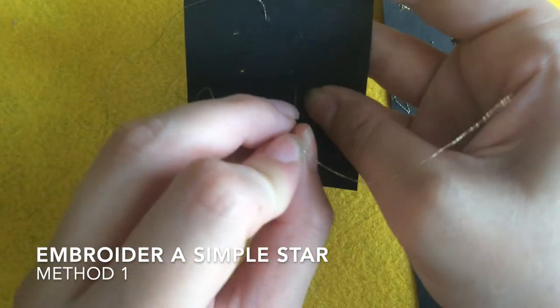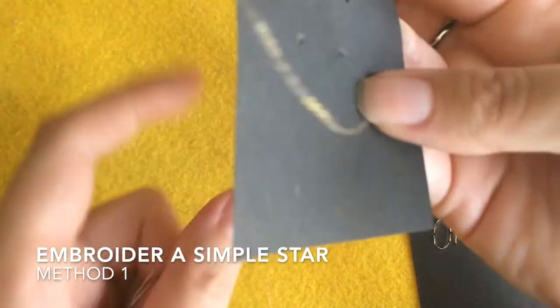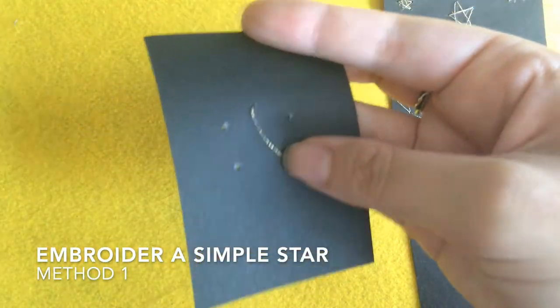Metallic thread is perfect for this craft, or you can use gold or white. You want to have a length of thread about as long as your forearm. Any longer and it could get tangled.